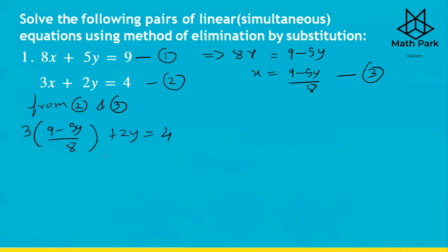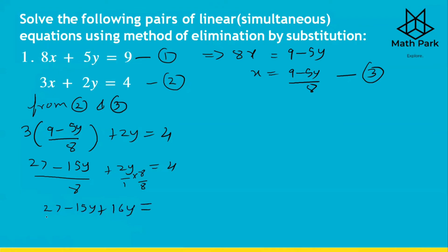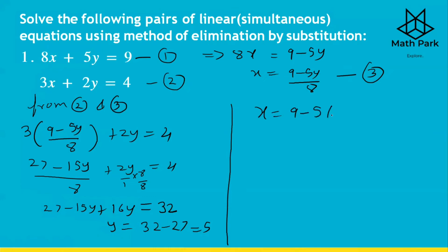Substituting into equation 2: 3·[(9 − 5y)/8] + 2y = 4. Expanding: (27 − 15y)/8 + 2y = 4. Multiplying through by 8: 27 − 15y + 16y = 32. So y = 32 − 27 = 5. Putting y = 5 into equation 3: x = (9 − 25)/8 = −16/8 = −2. So x = −2 and y = 5 is the solution for question 1.